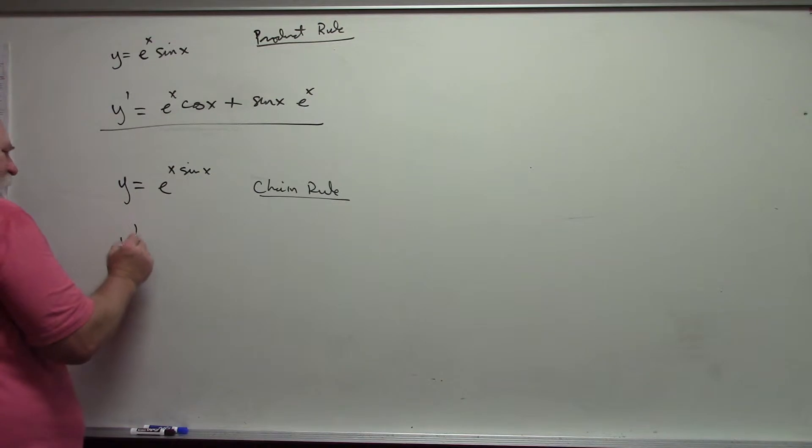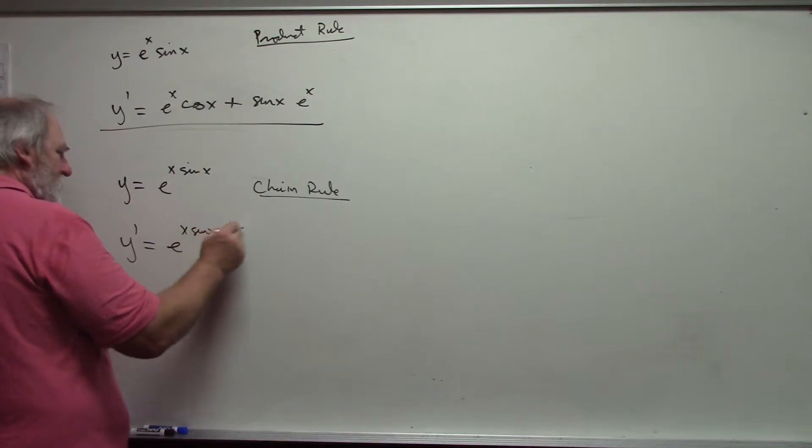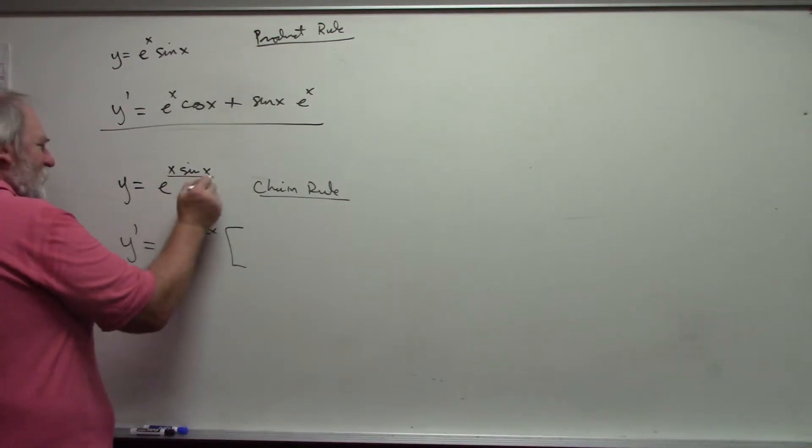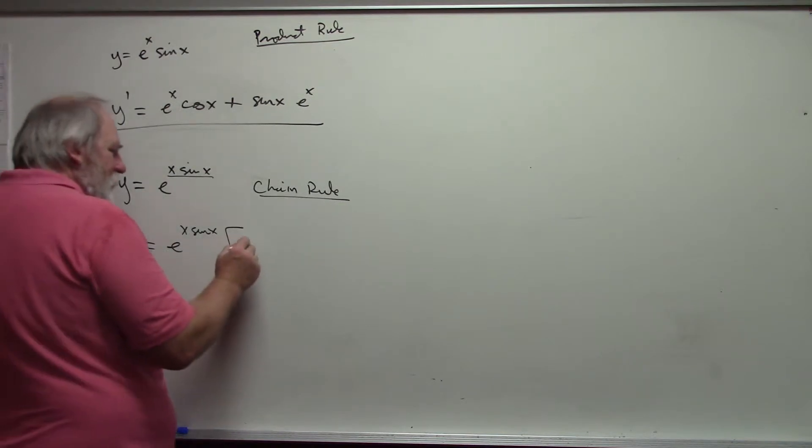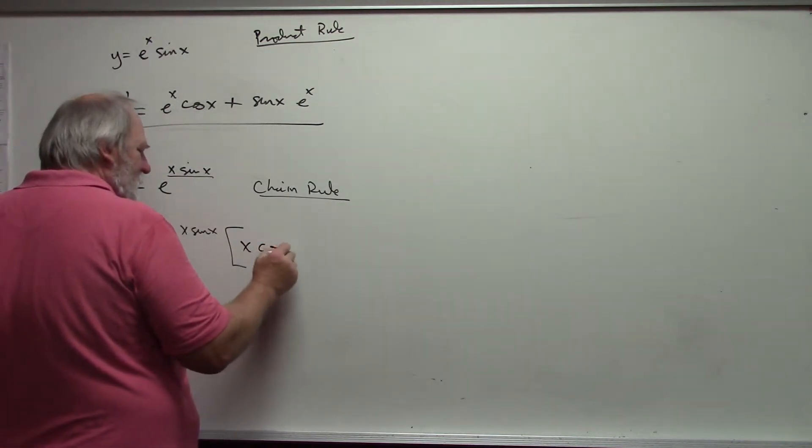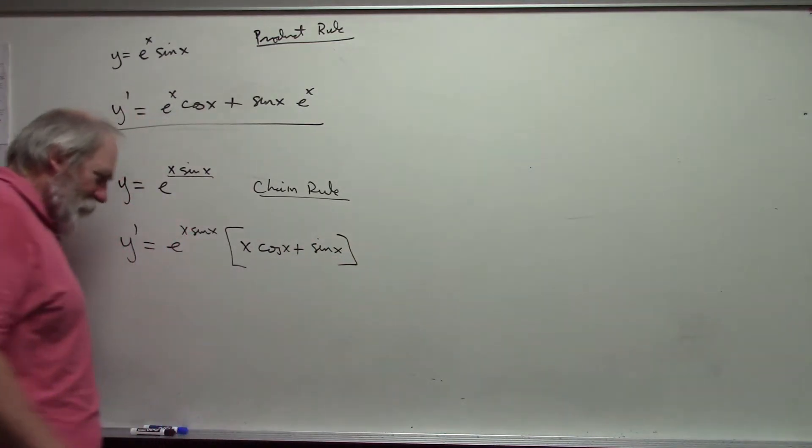My derivative here is the derivative of the outside function, the exponential, times the derivative of the inside, the product, which is first times the derivative of the second plus second times the derivative of the first. Derivative of x is just 1.